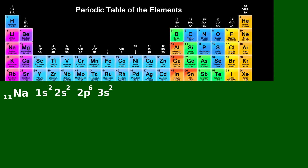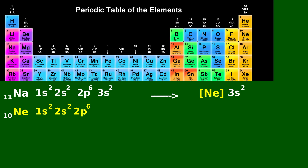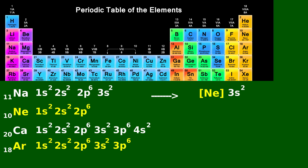While writing the sub-shell electronic configuration of elements with higher atomic numbers, the symbol of the noble gas preceding that element may be shown within square brackets, followed by the electronic configuration of the remaining sub-shells.